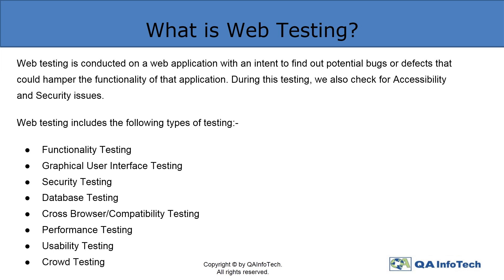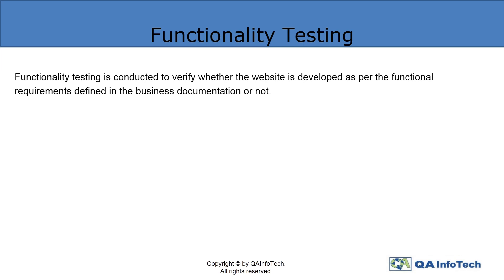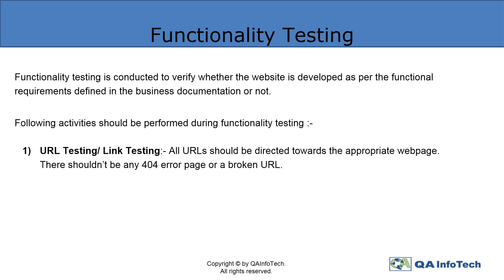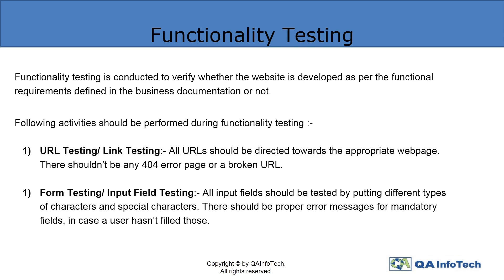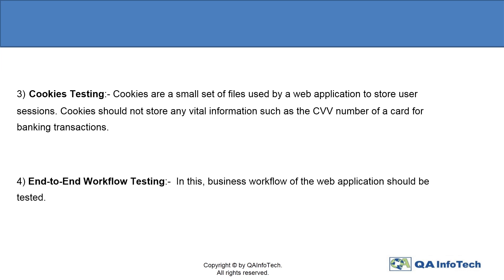Throwing some more light on the types of web testing, we firstly have functional testing. This type of testing verifies whether the website is developed as per the functional requirements defined in the business documentation or not. It covers essentially four activities: testing the functionality of the URLs or links, testing the input fields or forms to ensure proper functionality, testing the cookies to ensure that they do not store any vital information of the user, and lastly, an end-to-end workflow testing to thoroughly check the flow of a web application according to the business requirements.